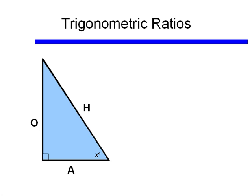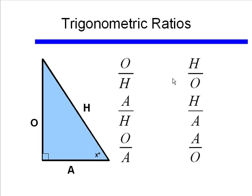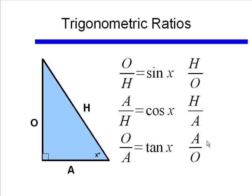So why have we bothered talking about opposite sides, adjacent sides, and the hypotenuse? We're going to put these three sides into ratios, and that will describe our trigonometric ratios. Here's my triangle again — I've moved x back down to the lower acute angle — with my side opposite, side adjacent, and hypotenuse. These are the six different ways I can organize these three sides into ratios: opposite over hypotenuse, adjacent over hypotenuse, opposite over adjacent, and their reciprocals — hypotenuse over opposite, hypotenuse over adjacent, and adjacent over opposite.